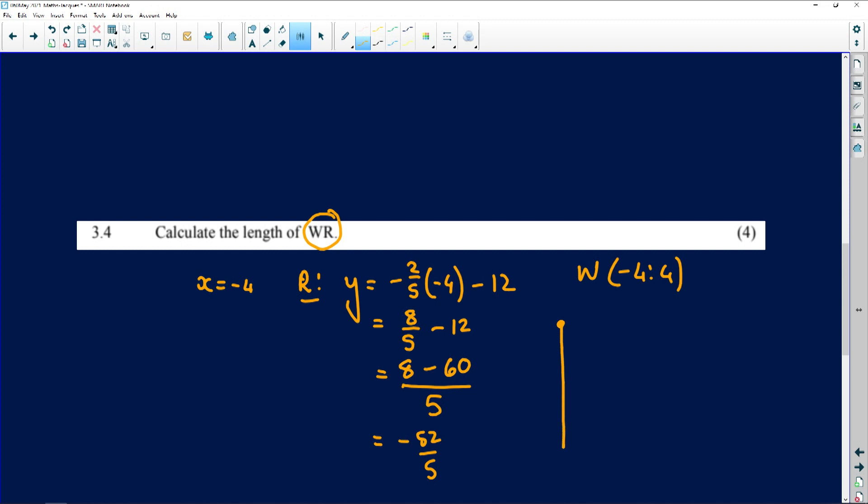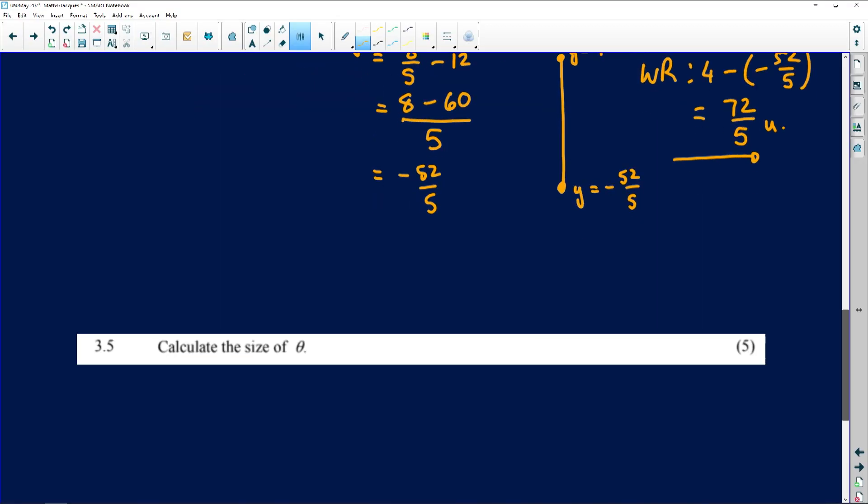Now remember that was a vertical line. So we're only looking at the y values. Here the y value was 4. Here the y value was minus 52 over 5. And what do I have to do? I've got to subtract those two because it's a vertical distance. So the length of WR will then be, if I go and subtract the two, I get 4 minus minus 52 over 5. And folks, that's beautiful calculator work will get you to 72 over 5 units for the length of that line. A little bit of a thinking to be done there. But the moment we saw it was vertical, we were okay with this question.